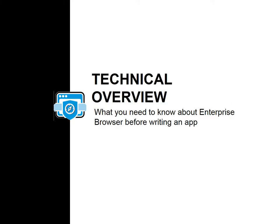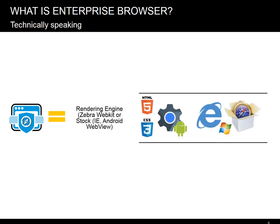Let's begin with the technical overview of the Enterprise Browser. What is Enterprise Browser, technically speaking? First, we took a choice of browser rendering engines. On Android, you'll want to use the native WebKit-based WebView, but on Windows, you can choose between Stock IE or our own cross-platform build of WebKit. That will give you the HTML rendering power compared to or exceeding the native OS capabilities.